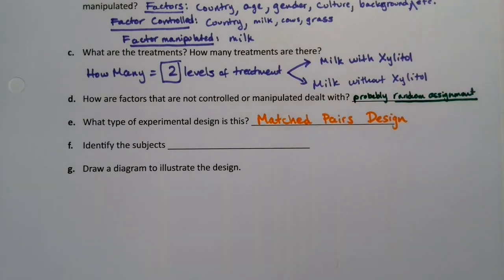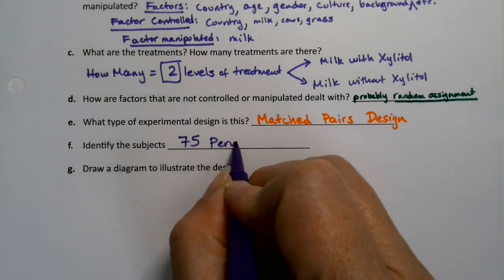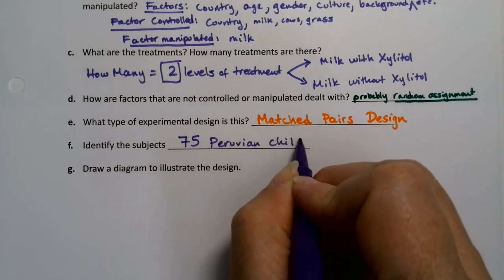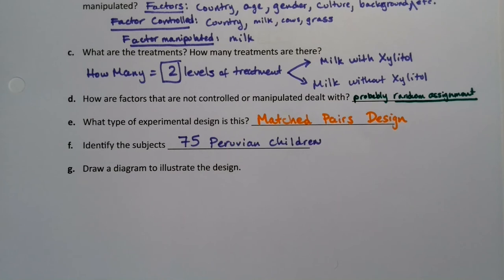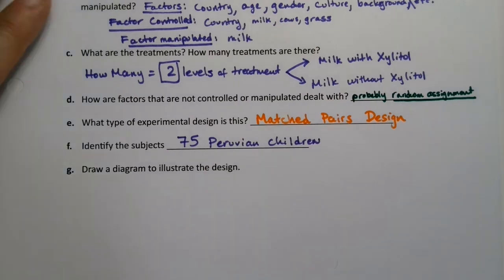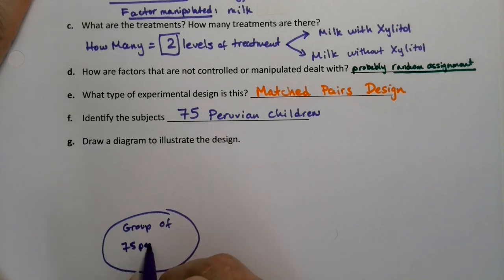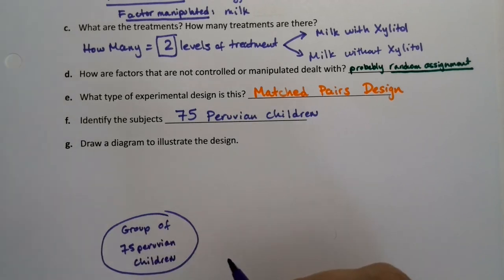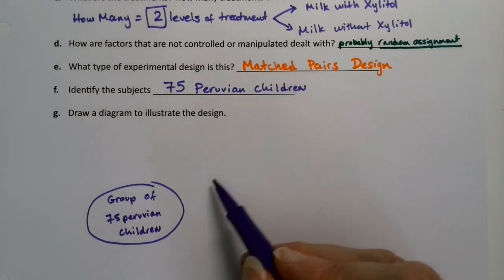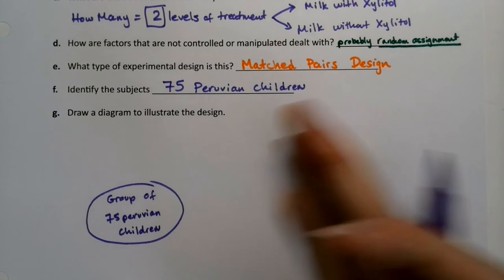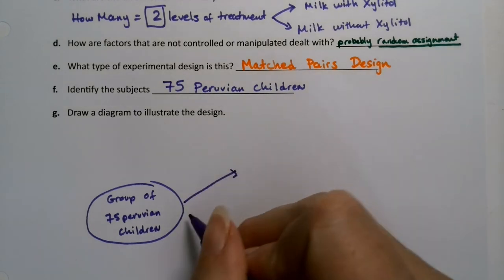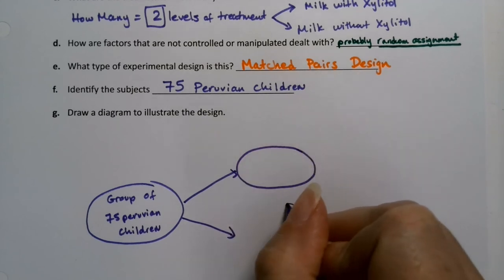The subjects would be those 75 Peruvian children. Now let's draw a diagram to illustrate this. We have one group of 75 Peruvian children. You don't want them all to have the milk with xylitol first and then all have the milk without xylitol — that would be unfair. So you randomly assign those two groups: milk with xylitol and milk without xylitol.